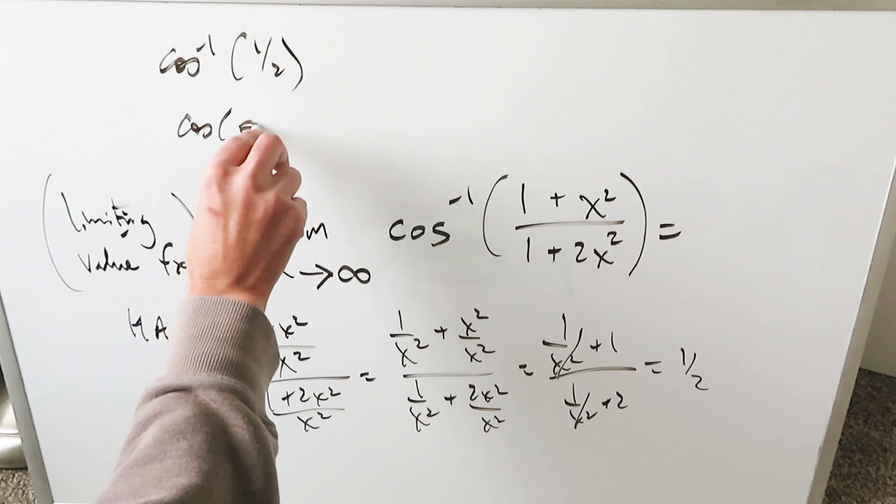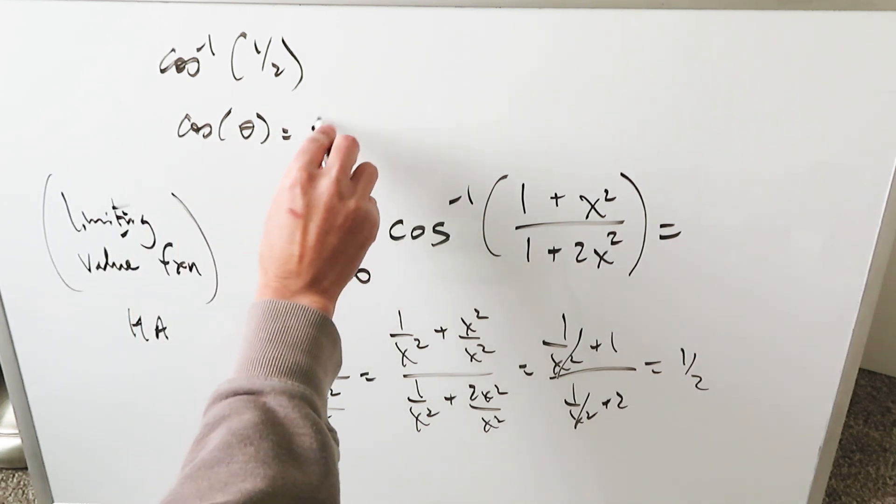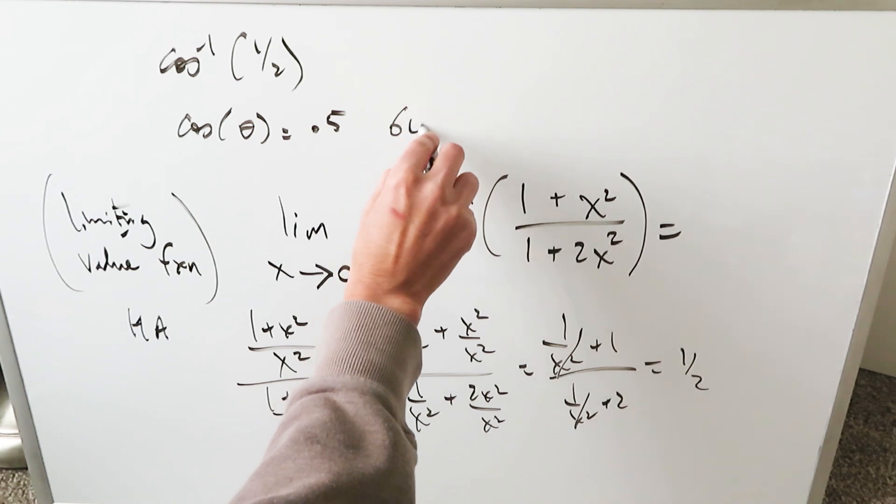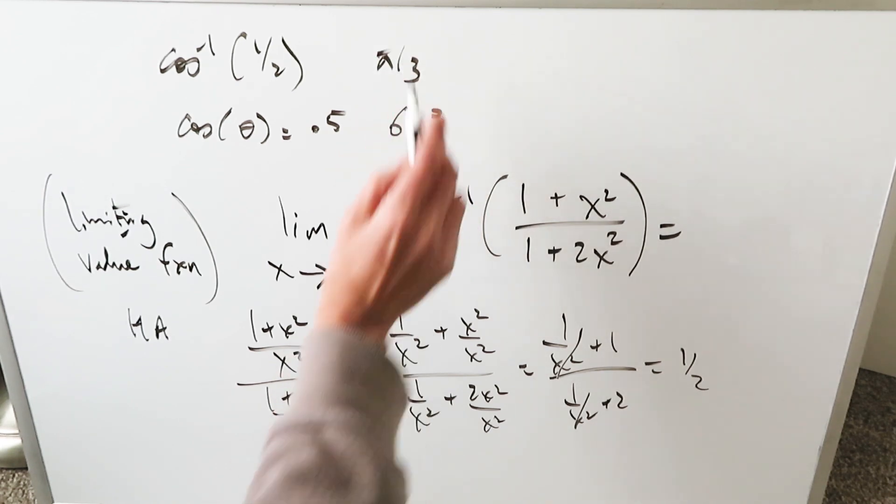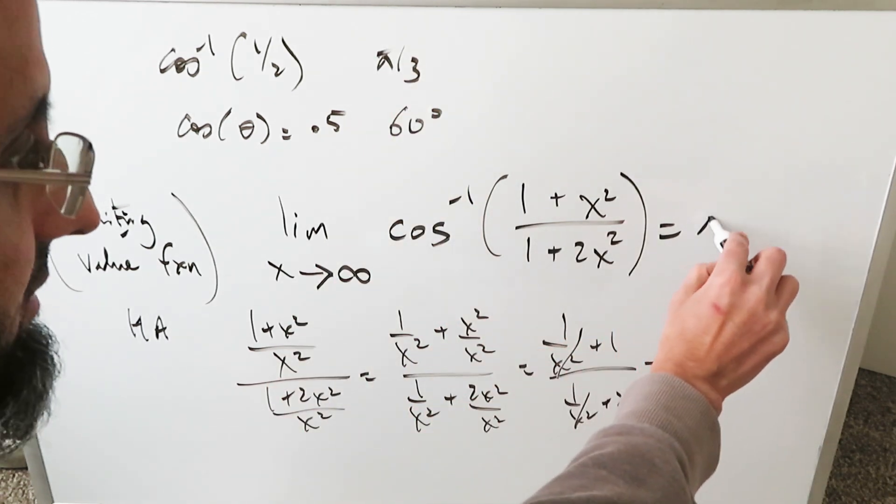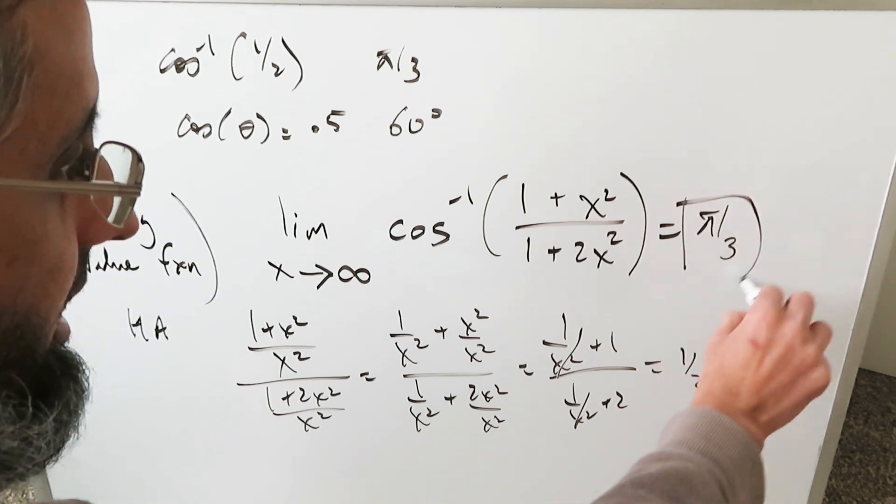Cosine of what angle? If you were to do the cosine, you would get a 0.5, and you know what that angle is. It's 60 degrees, or you can say pi over 3. Therefore, the answer to this limit would be pi over 3, and it's done.